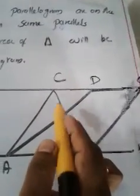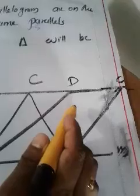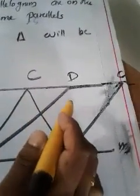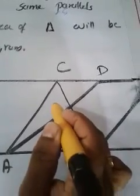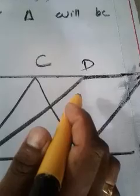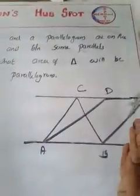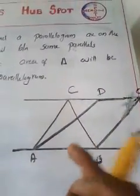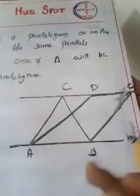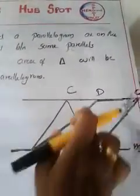If the triangle and parallelogram are on the same base and between the same parallel lines, their areas are not equal as in the previous case. Instead, the area of the triangle will be half of the area of the parallelogram. For example, if the parallelogram's area is 20, the triangle's area will be 10. That is what we have to prove.